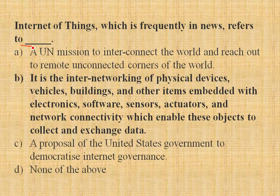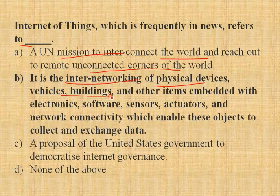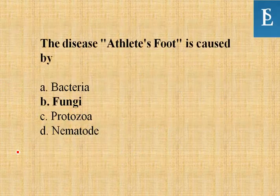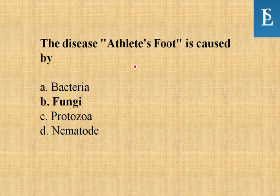Internet of Things, which is frequently in the news, refers to: the inter-networking of physical devices, vehicles, buildings, and other items embedded with electronics, software, sensors, actuators, and network connectivity, which enables these objects to collect and exchange data. Option B is the correct answer.